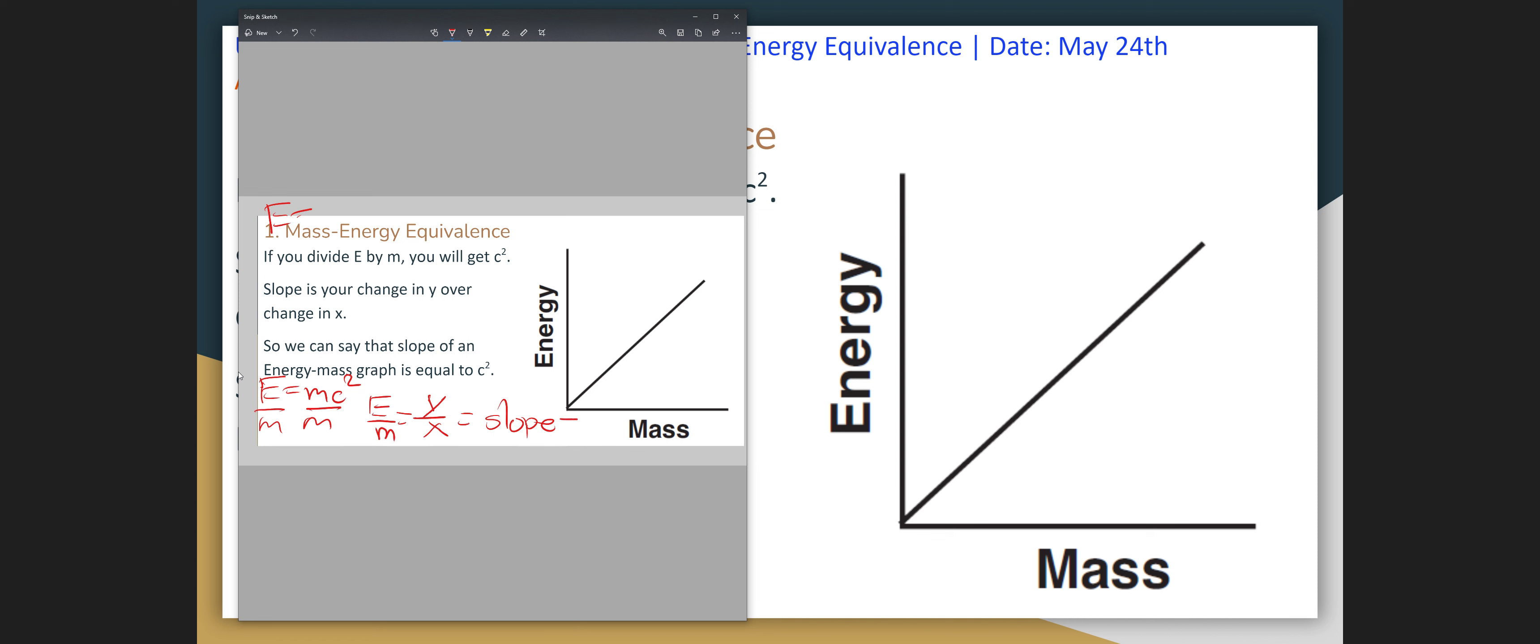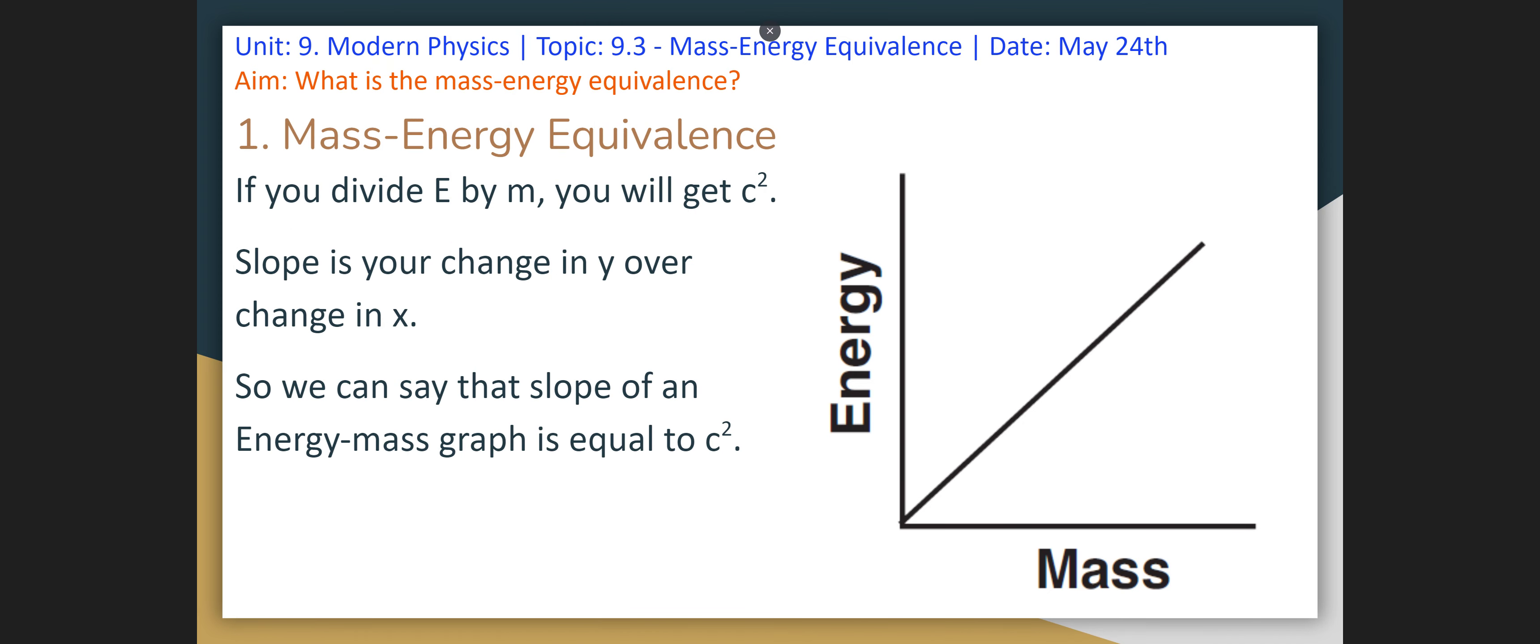So in the energy-mass graph, your slope is c squared. And it's not a parabola as you might expect because you have the exponent. But the way it works here is that if you do E over m, you get c squared, and that's going to be your slope.